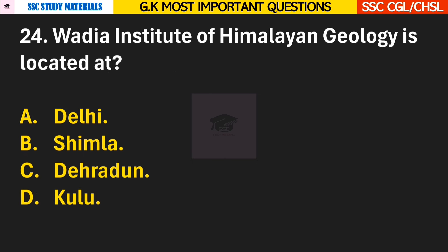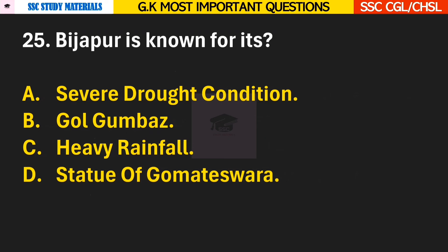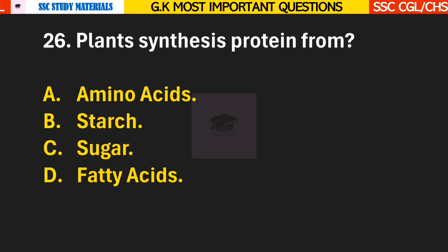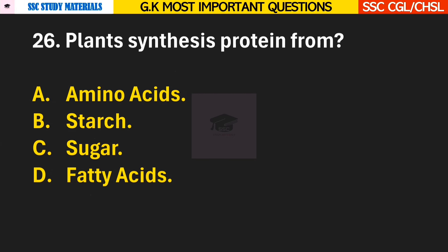Question 24: Wadia Institute of Himalayan Geology is located at? Answer C — it is located at Dehradun. Question 25: Bijapur is known for its? Answer B — Gol Gumbaz. Question 26: Plants synthesize protein from? Answer A — Amino acids.